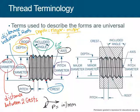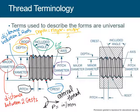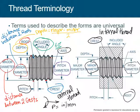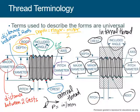This is an external thread, and here it's an internal thread. You have the same logic — but here the crest becomes the root and the root becomes the crest, so we flip them. The pitch diameter remains the imaginary diameter. The minor diameter is between two crests, and the major diameter is between two roots.